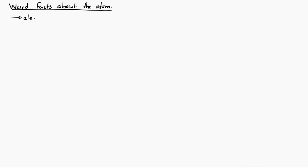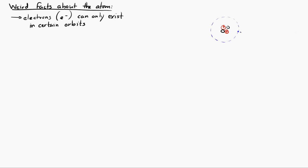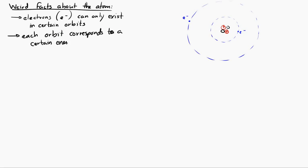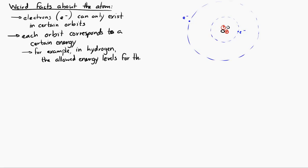I'm going to go over a couple of weird facts about the atom. These electrons, in the Bohr model, they can only exist in certain orbits. They can't just be in any old orbit — there are only certain orbits which are allowed. Each orbit of the electron corresponds to a certain energy. For example, in a hydrogen atom — which is nice and simple because it just has one proton at the center and one electron on the outside — the allowed energy levels for the electron are these.